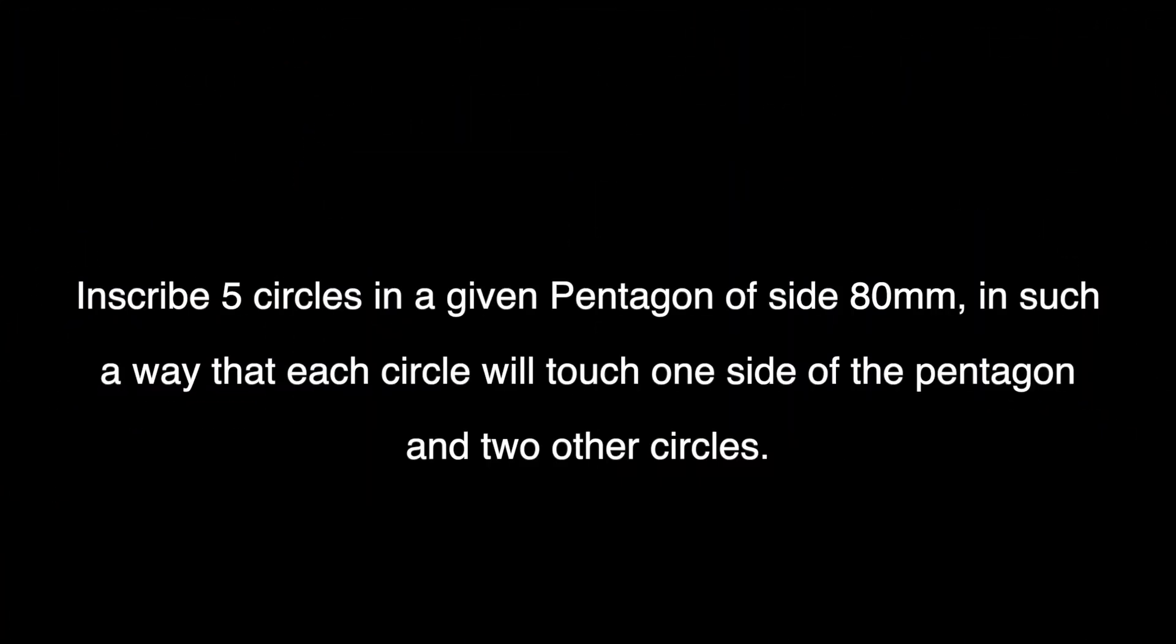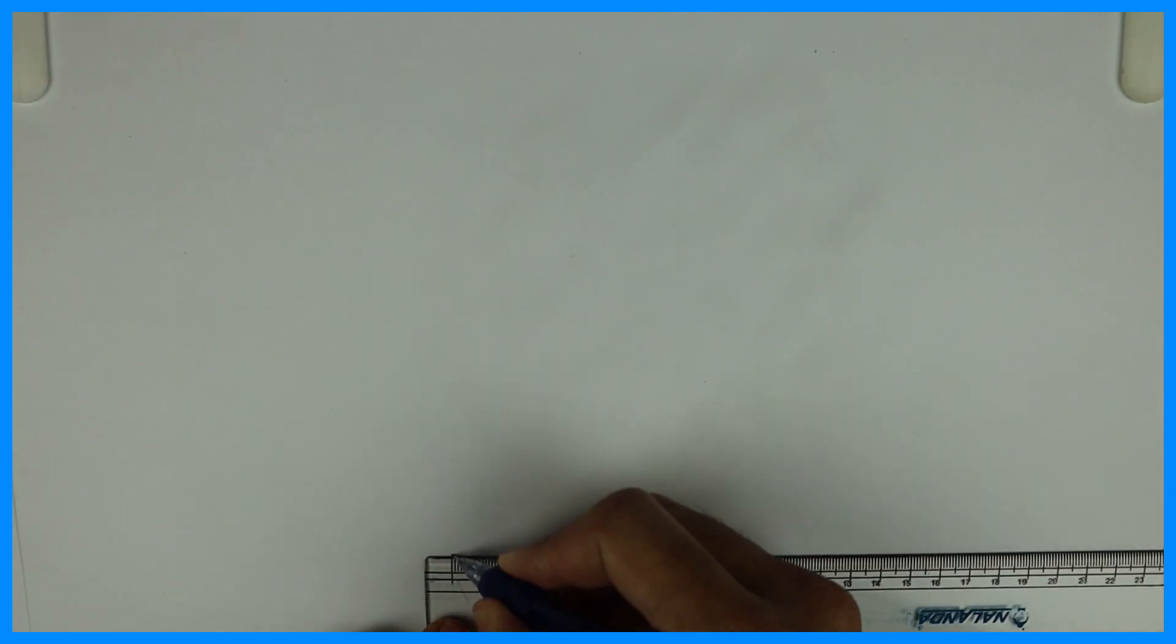Welcome to technical drawing. Today we are going to inscribe five equal circles in a given pentagon of side 80mm, in such a way that each circle will touch one side of the pentagon and two other circles.